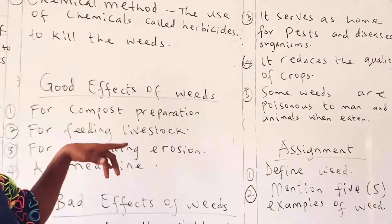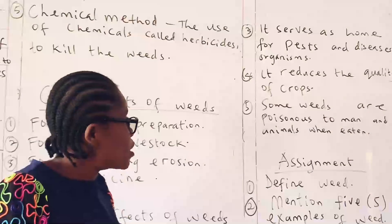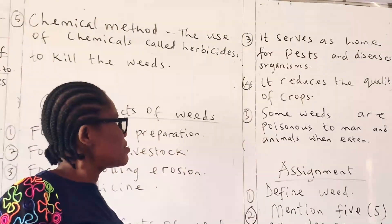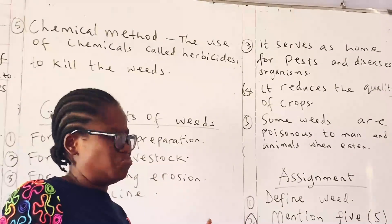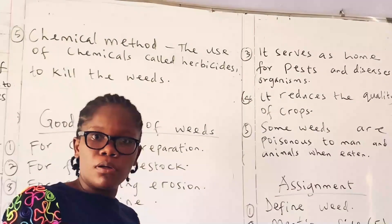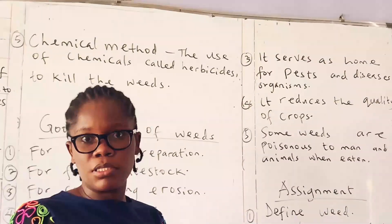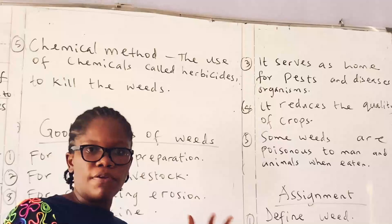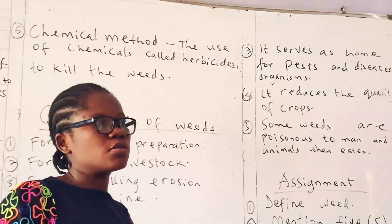It is bad to allow weeds to grow alongside the crops. Another bad effect is that some weeds are poisonous to man and animals when eaten. When you introduce your livestock into the farm to feed on weeds, they may end up eating poisonous weeds which can cause harm to them. So it is better to weed your farm in order to prevent poisonous weeds from affecting your animals.